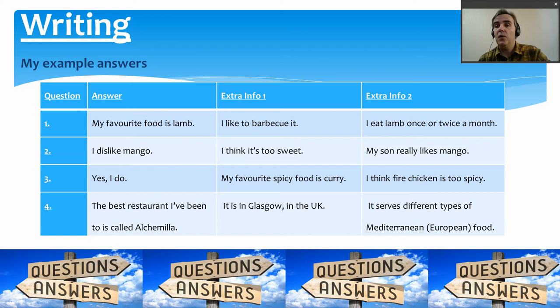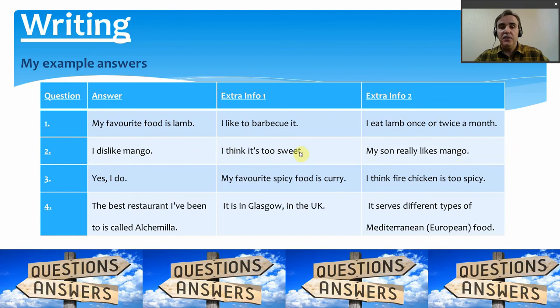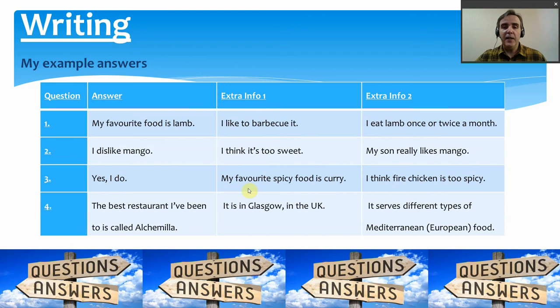For question two, what food do you dislike? I dislike mango — I think it's too sweet — but my son really likes mango. So I've given my answer, why I dislike it, and somebody else who actually likes mango. For question three, do you like spicy food? Yes, I do. My favourite spicy food is curry, but I think fire chicken — buldak — is too spicy; I can't taste anything except the chilli. So I've got my answer, my favourite spicy food, and a spicy food I don't like.